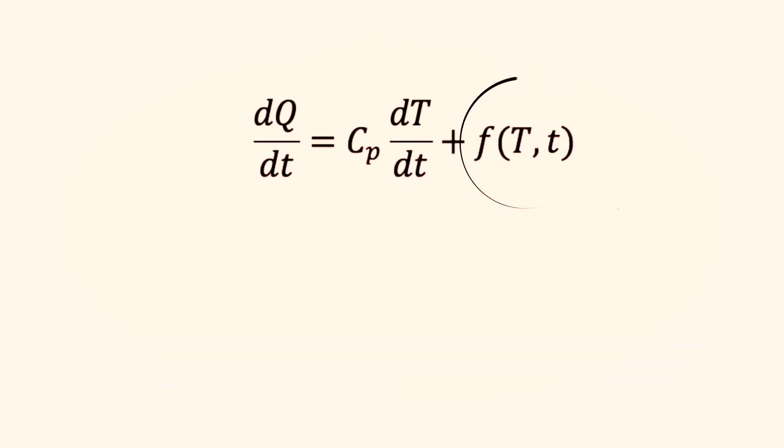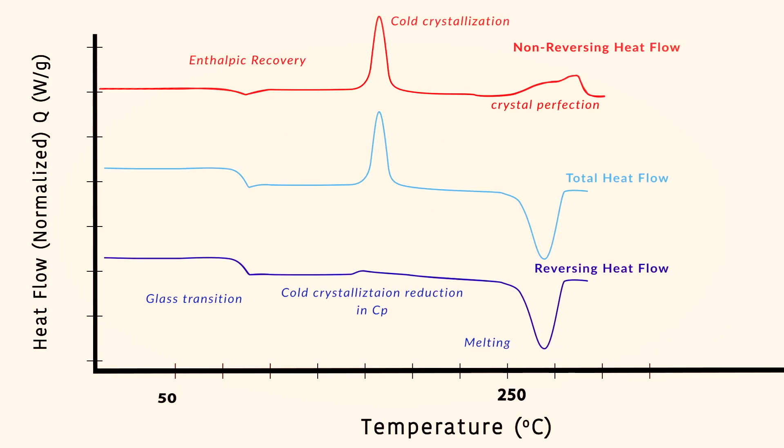The kinetic component or the temperature dependent component is called the non-reversing heat flow, and the specific heat component or the rate of temperature dependence component is also called the reversing heat flow. All three signals are shown in this plot of a PET sample. Now let's look at the first reversing signal. As we heat the sample, we see the glass transition temperature at around 75 degrees. As we continue to heat, cold transition takes place, and a small decrease in Cp can be seen. As we further heat the sample, the melting process begins to take place.